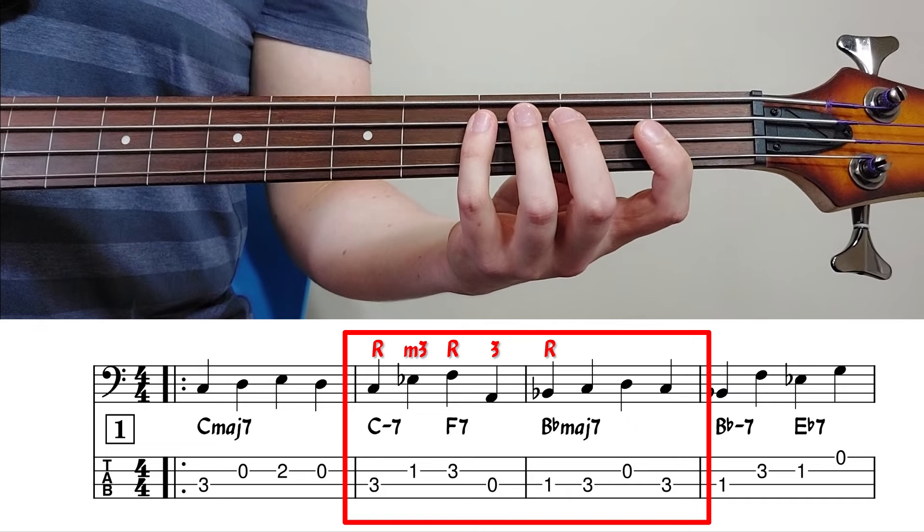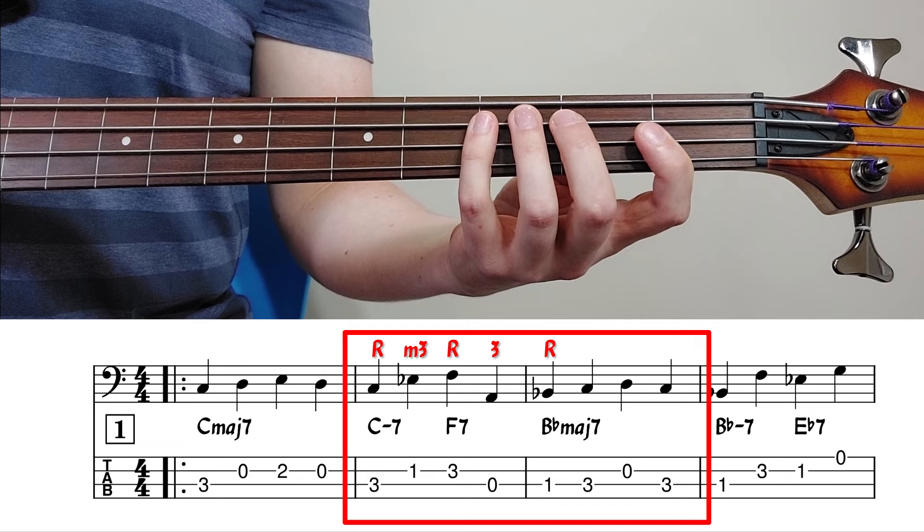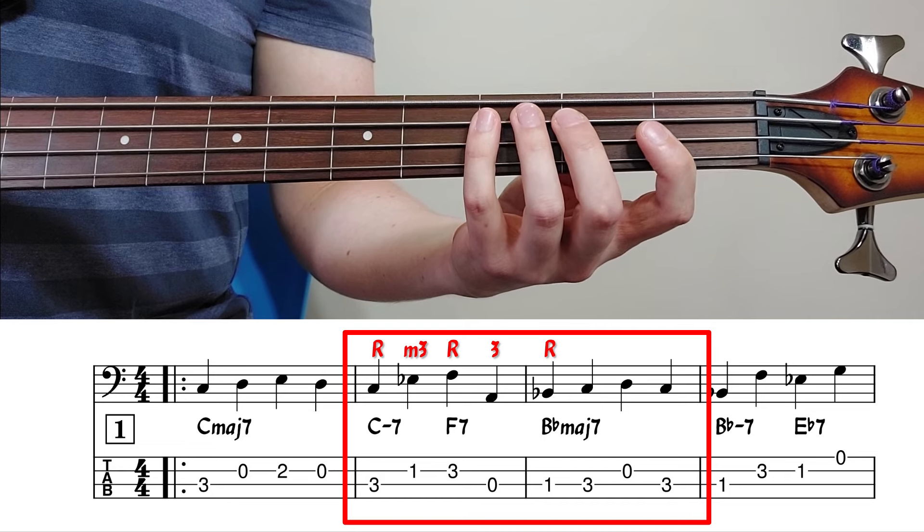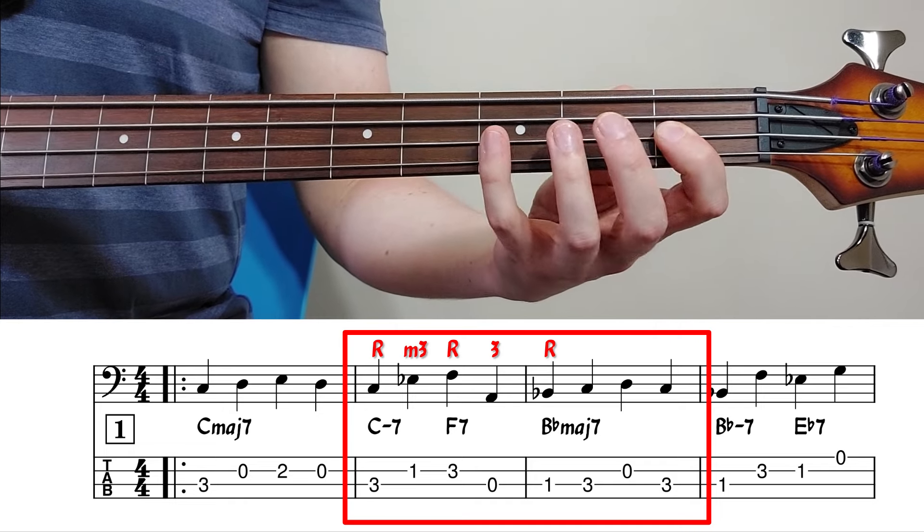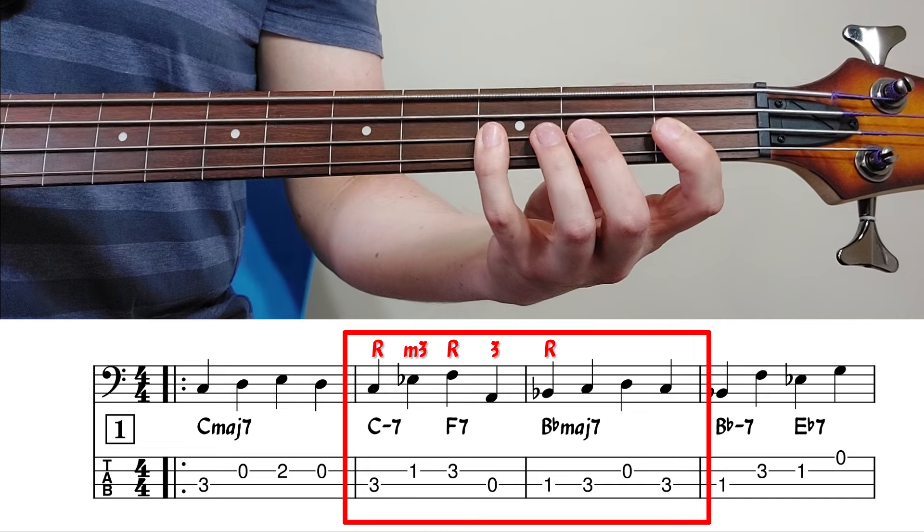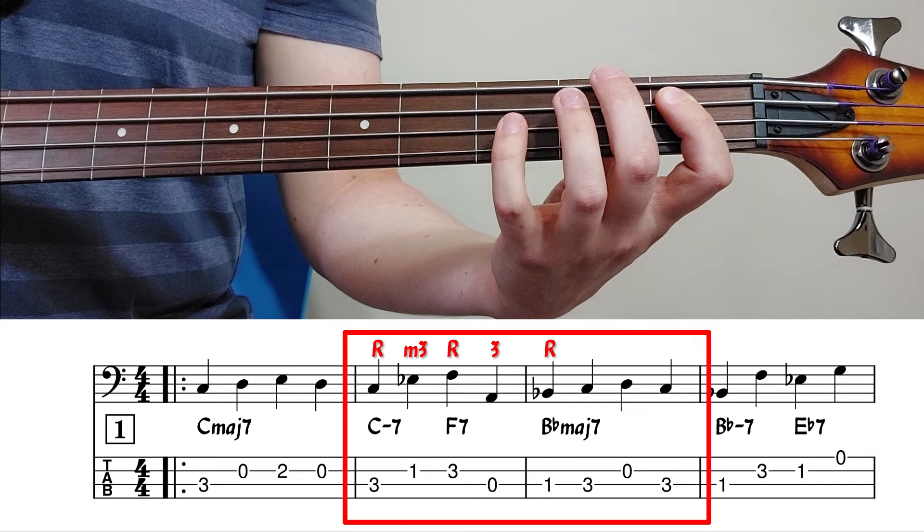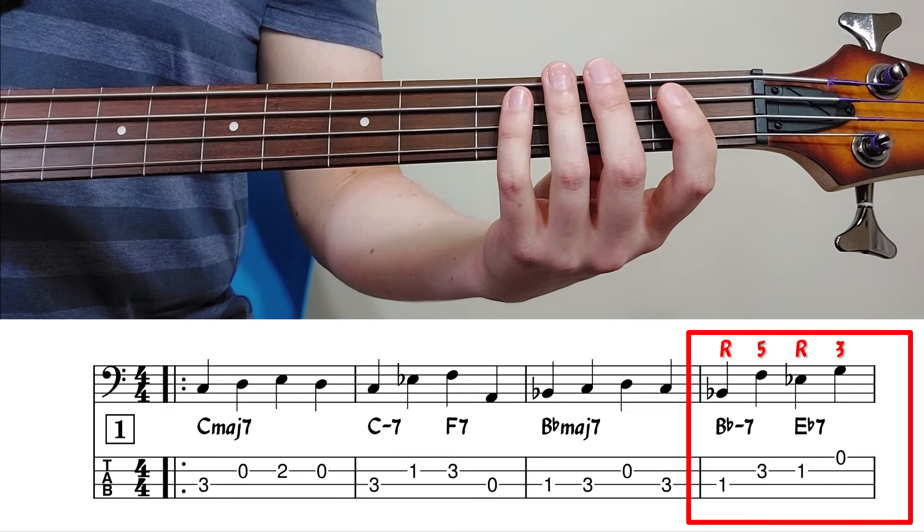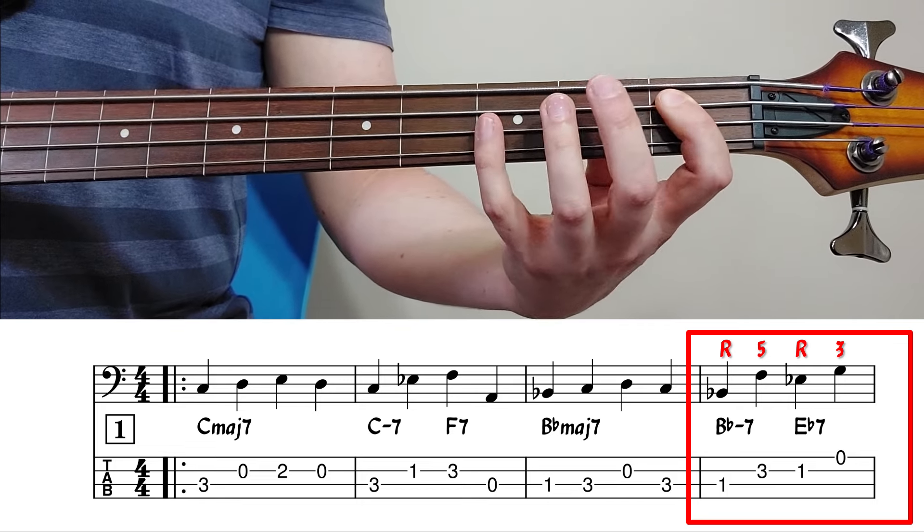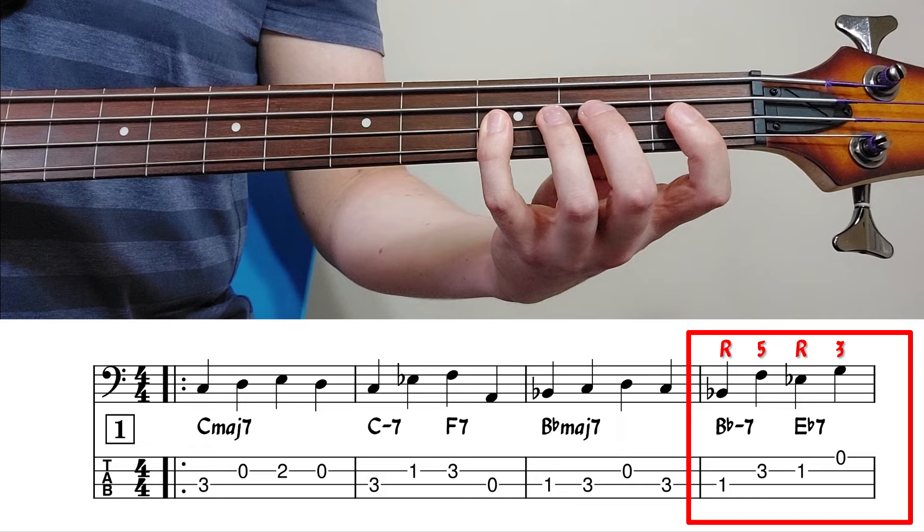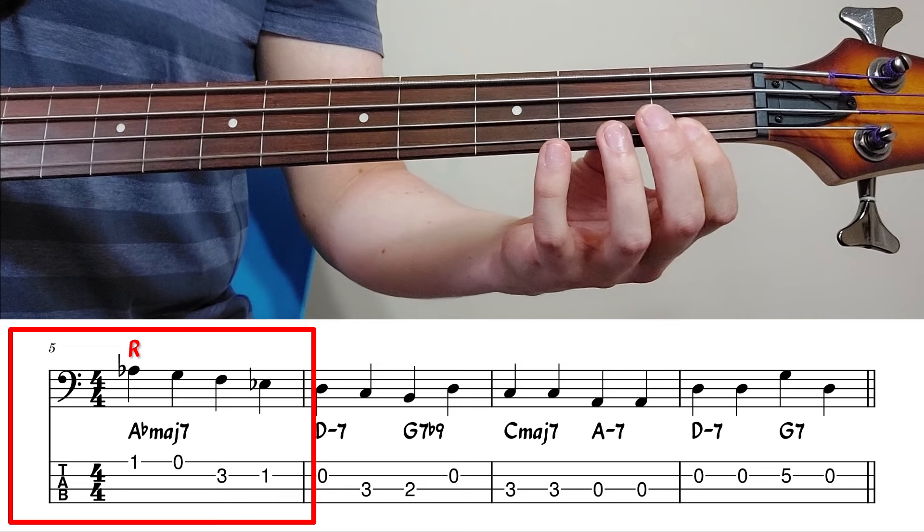Take a closer look at the notes used in each of these 2-5-1 lines. For the 2-5-1 in B flat major, starting on the 2 chord, we're playing root, minor 3rd, and then root of F7, major 3rd, and resolving to the root of the 1 chord. The pattern on the next 2-5-1 is a little bit different. We're playing root, then 5th, then root, and major 3rd of E flat 7, going to the root of A flat.